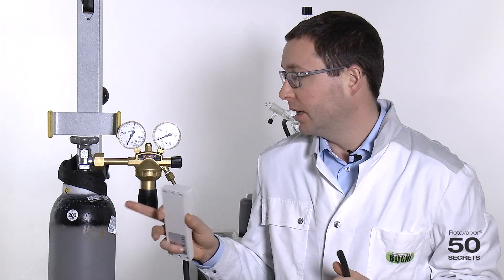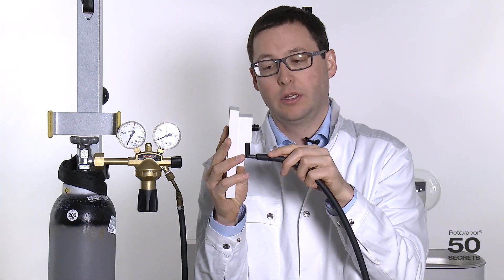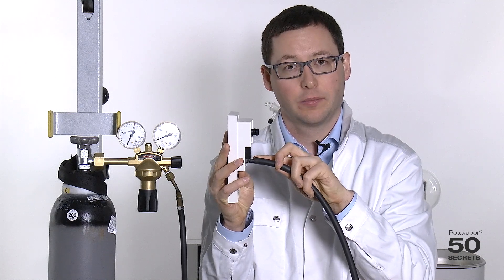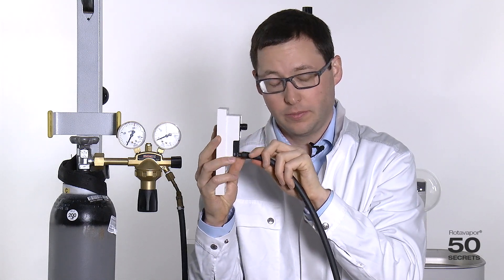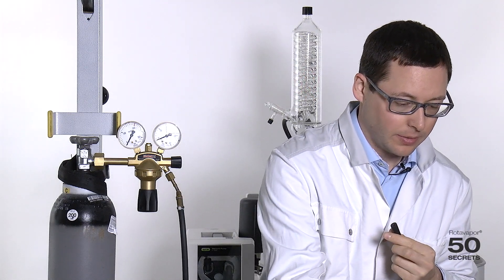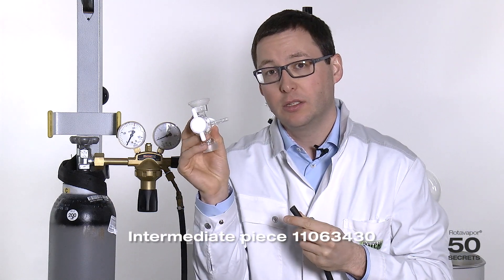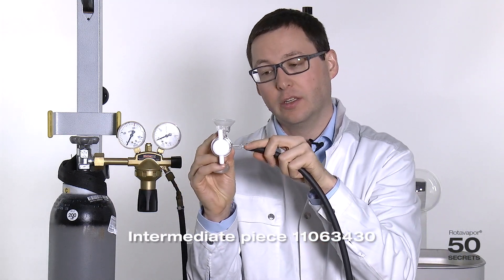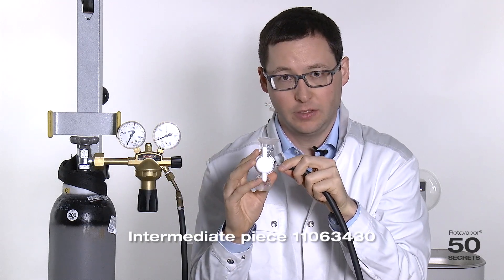First, we attach the nitrogen to the vacuum box outlet. This is what we will show. And second, we could use this intermediate piece to connect it here to float the system through the intermediate piece.